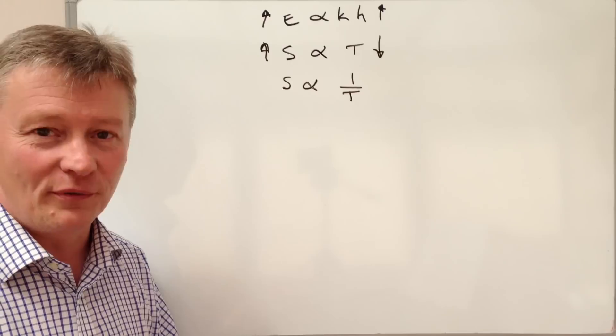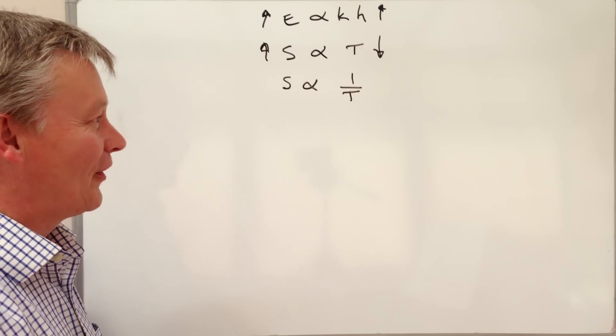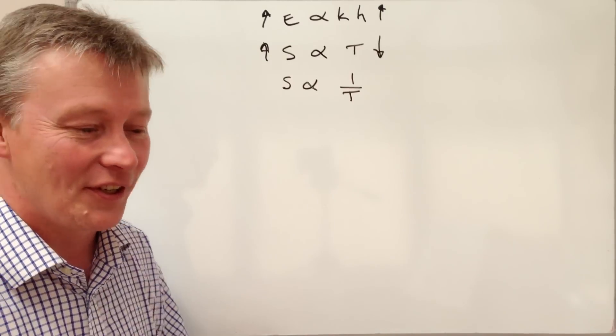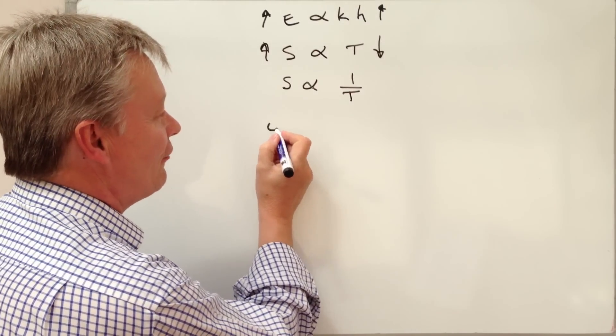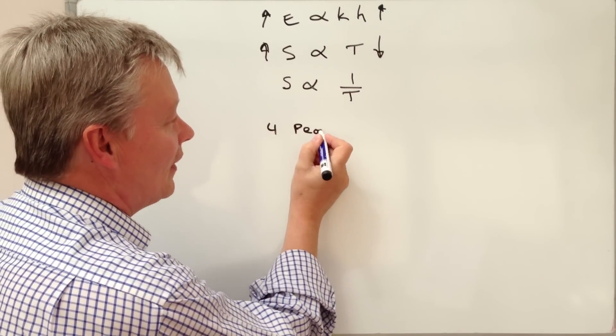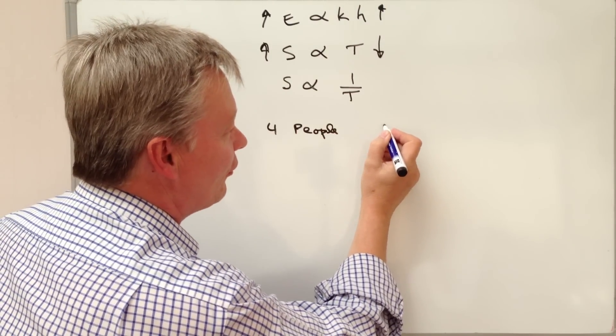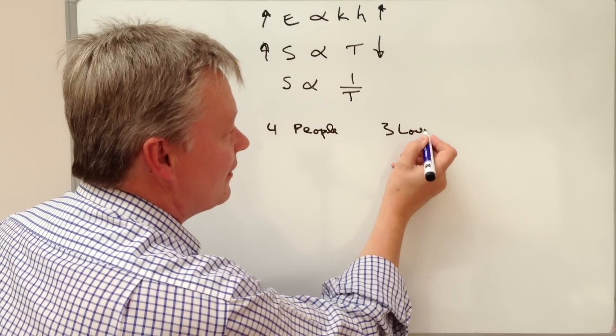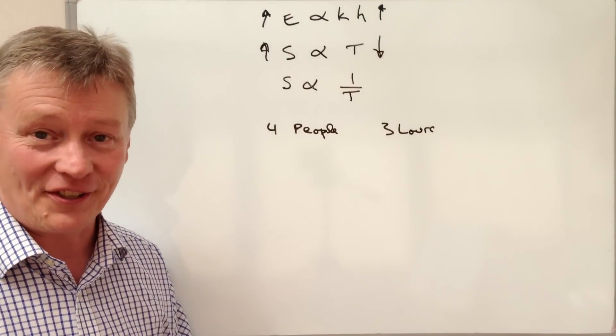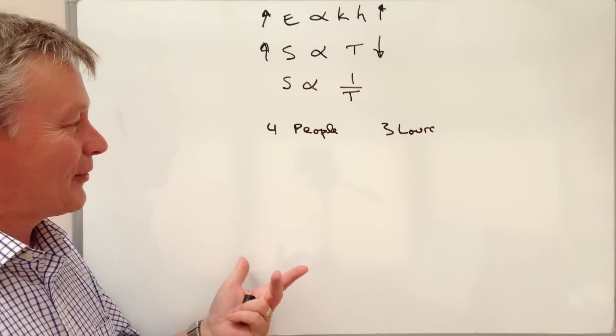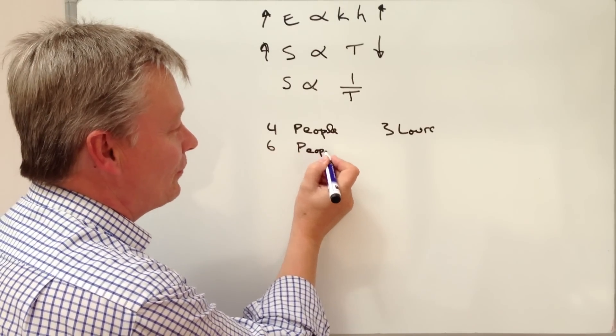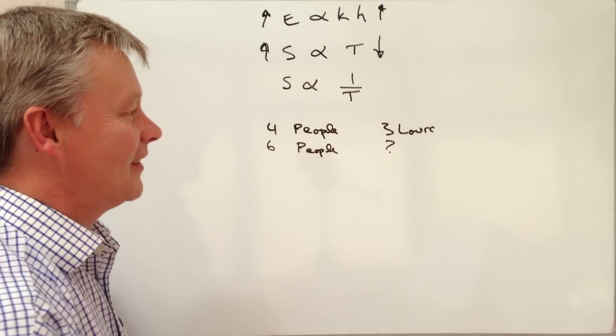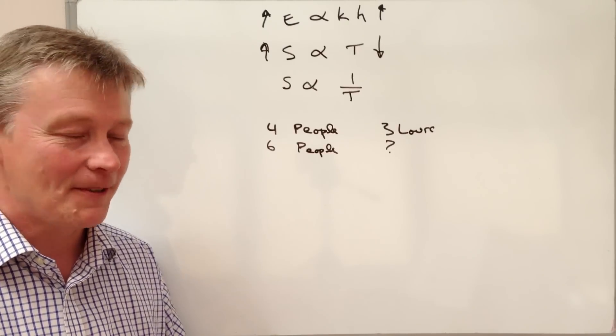So this particular question deals with painting a fence. The information given to us is that it takes 4 people 3 hours to paint a fence. And the question is, how long will it take 6 people to paint the same length of fence? This is a fairly typical inverse proportionality question.